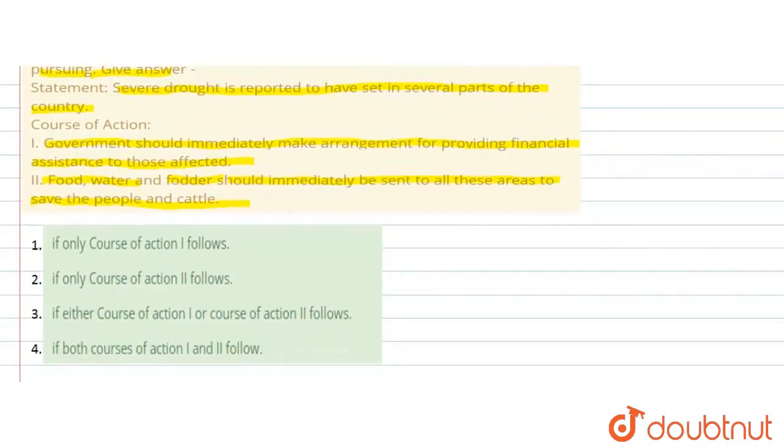So first of all, here is the problem - a very bad situation, severe drought in several parts of the country. This is an extreme level of drought. So here is the problem.